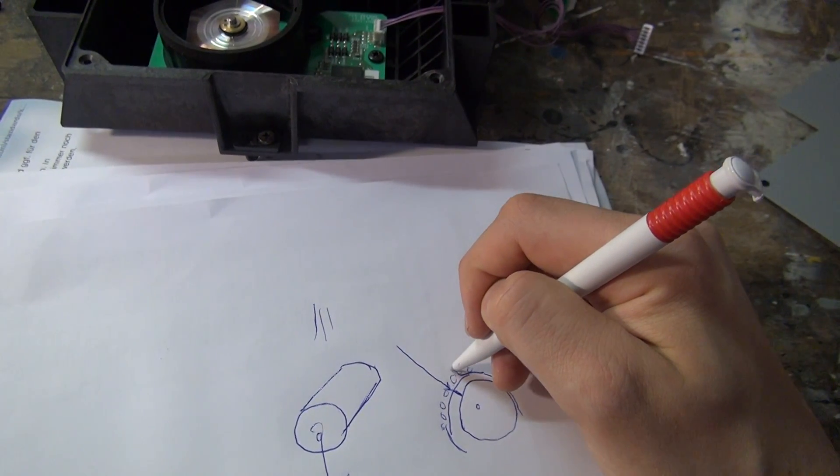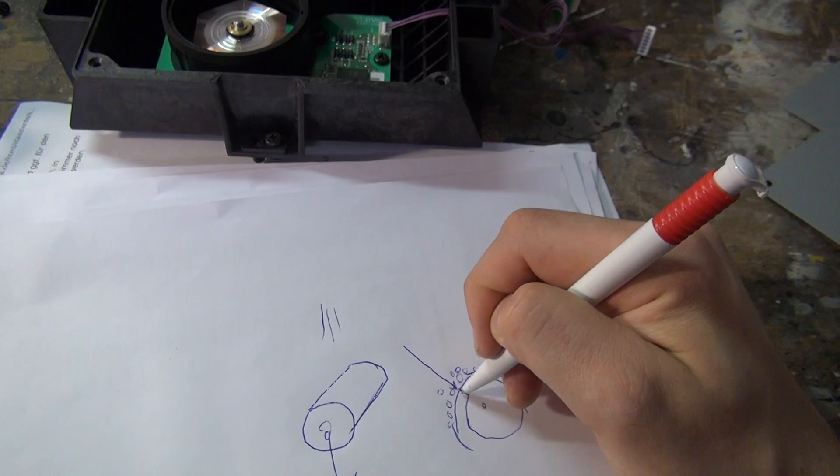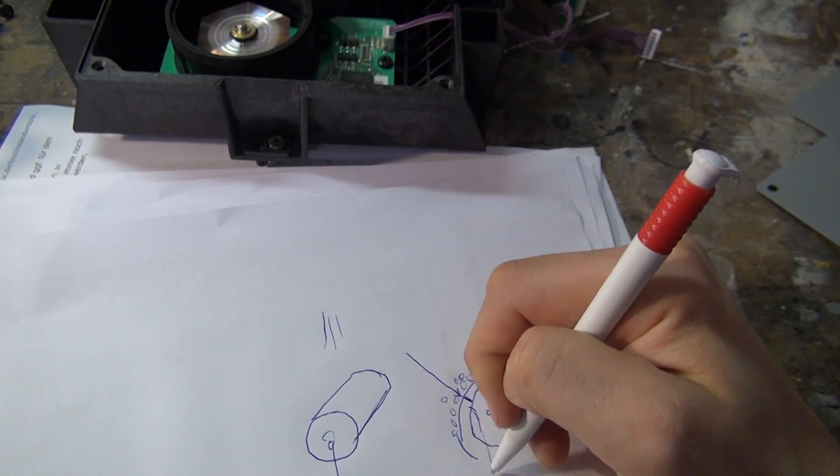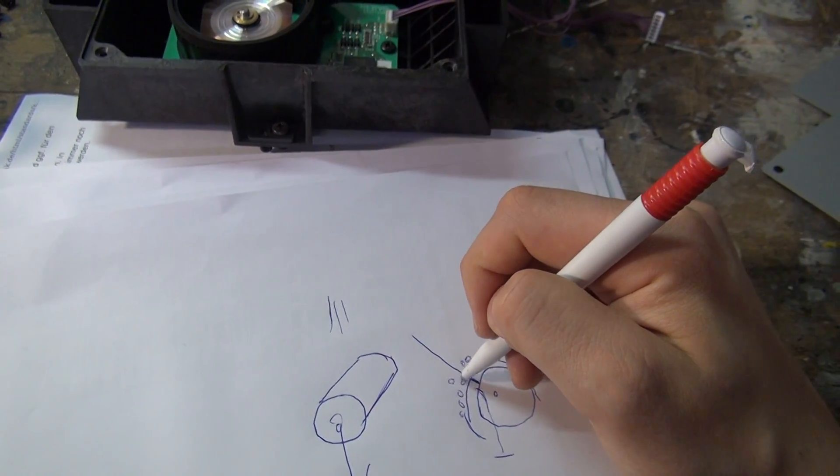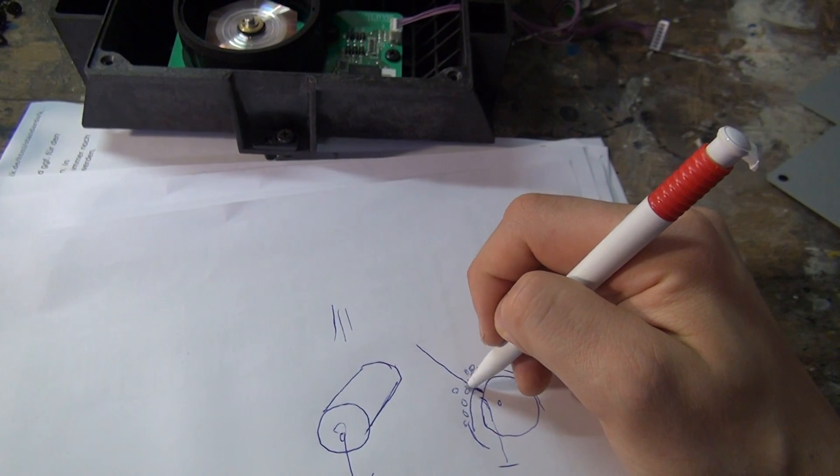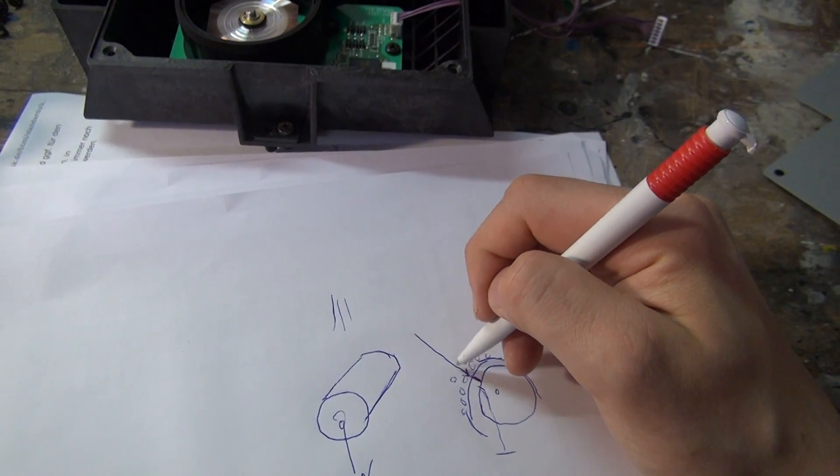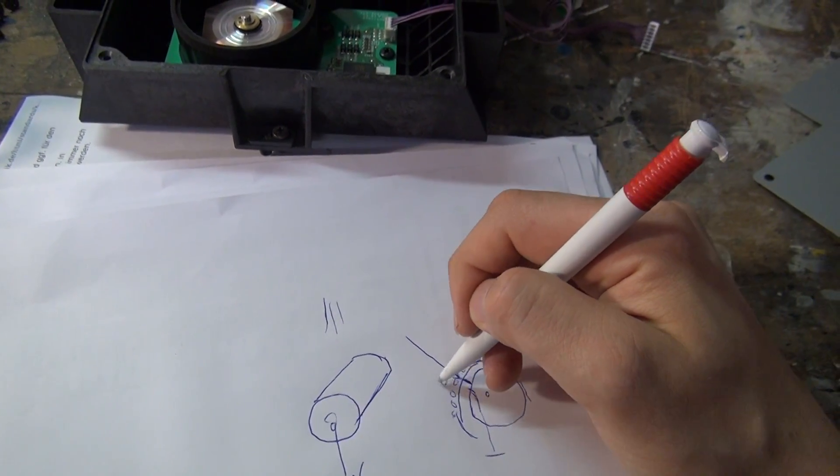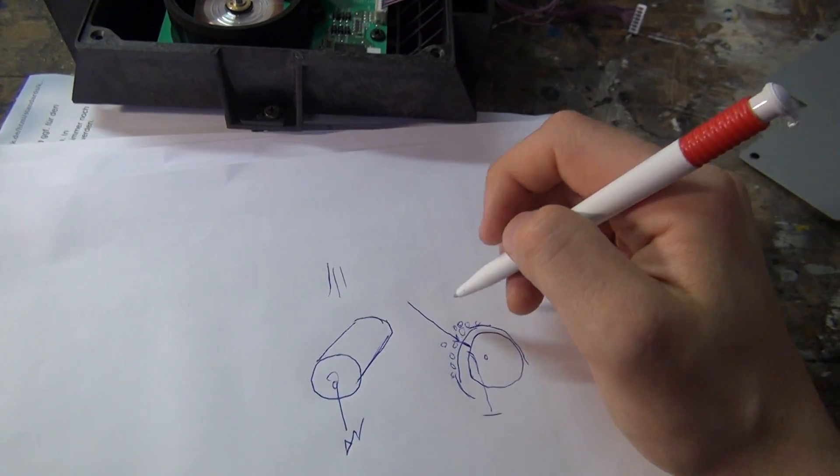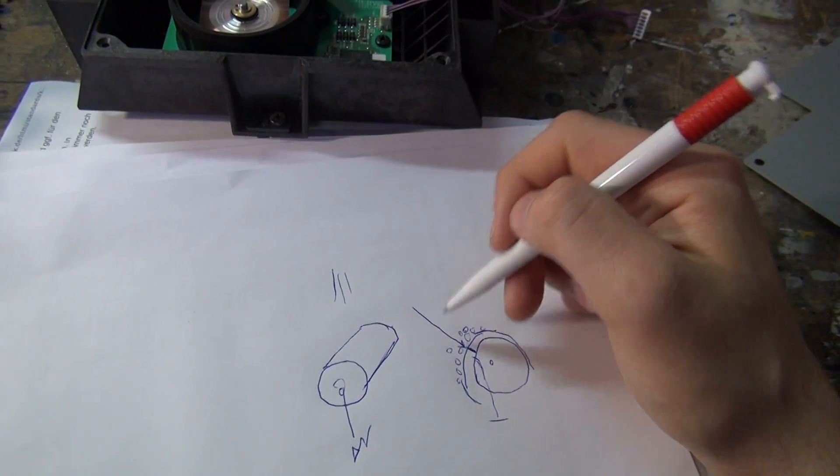And the wheel cannot get hold of the toner anymore, so it just comes off. And that's how you draw your picture on this wheel.